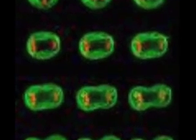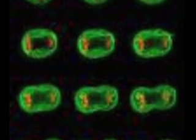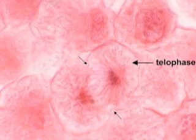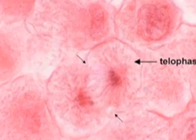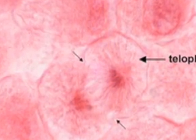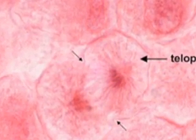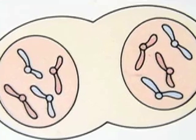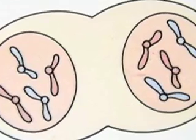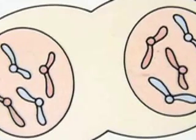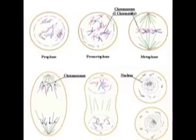Finally, in the fourth stage, telophase, a new nuclear membrane forms around the new nucleus at each pole. Mitosis cell division is the process of sorting and distributing the chromosomes to form new nuclei.